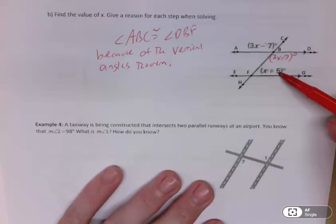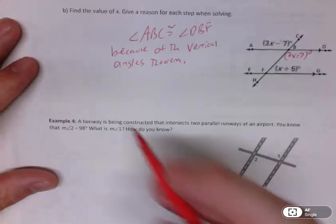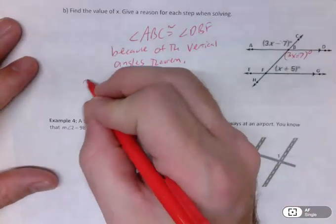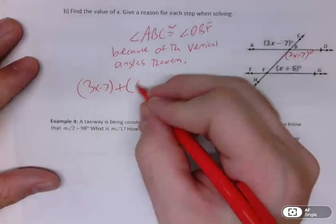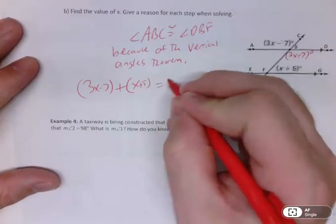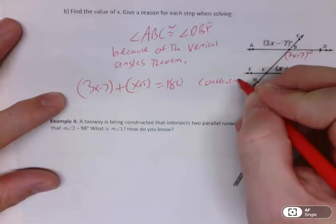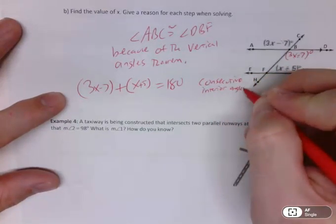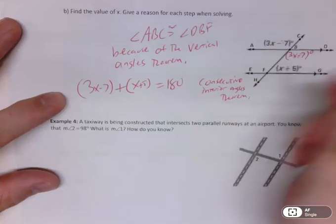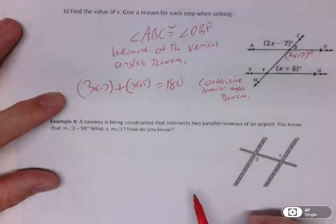And hopefully you realize those two angles are now in consecutive interior positions or same-side interior positions, which means, of course, they have to be supplementary. So I'm going to actually set up my equation: 3x minus 7 plus x plus 5 must equal 180. And that one would be the consecutive interior angles theorem or same-side interior angles theorem. Both would be okay.